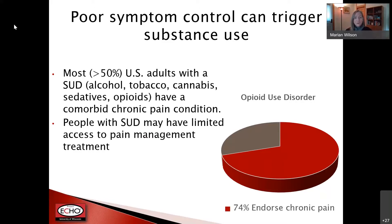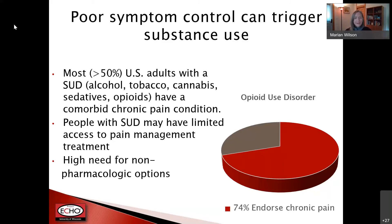I started my research in chronic pain populations and became very curious about the opioid use disorder population because many people had this overlap — they might have started with an opioid prescription for pain but were now in treatment for opioid use disorder. Once in the OUD treatment program, they were often told, 'We don't manage pain here,' meaning they wouldn't prescribe opioids for pain. But that statement does a disservice to the population, because their symptom management is part of their substance use problem. There's a high need for non-pharmacologic pain and other symptom management options within this population.